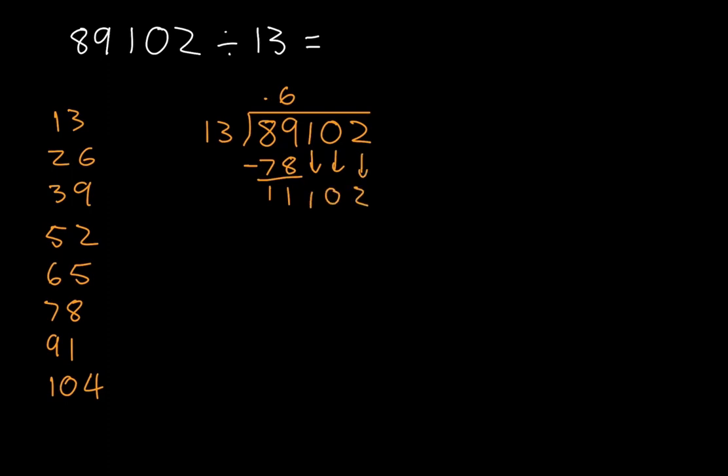Now 13 doesn't go into 1, it doesn't go into 11, but it does go into 111, and it goes in 1, 2, 3, 4, 5, 6, 7, 8 times. Now we say 13 times 8, and that's 104. We subtract and we're left with 7, so we bring down the 0 and we bring down the 2.